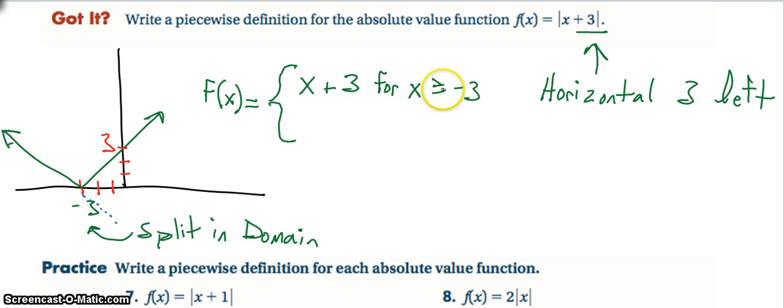And think about the values of x. We know that the negative three is the split, but it needs to be greater than or equal to because if I plug in a negative three here, I will get negative three plus three being zero, which spits out my y value or my f of x as being zero.